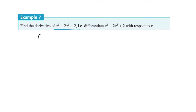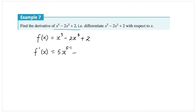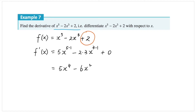So in this question we want to find the derivative of this function. If I define my function to be f of x is equal to x to the power of 5 minus 2x cubed plus 2, then I can easily find its derivative f dash of x. It's going to be — I bring down the 5 and reduce the power by 1, so 5 minus 1, and I bring down the 3 to multiply with the 2. Remember, if we have a term that's a constant it becomes 0. So f dash of x is equal to 5x to the power of 4 minus 6x squared.